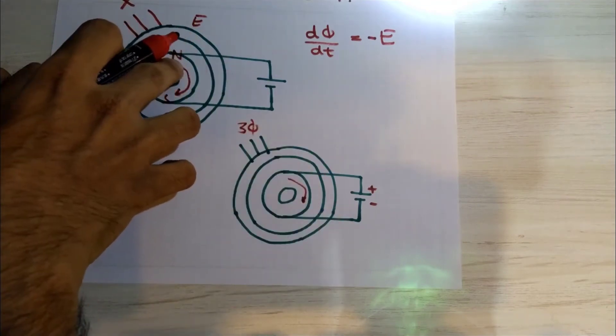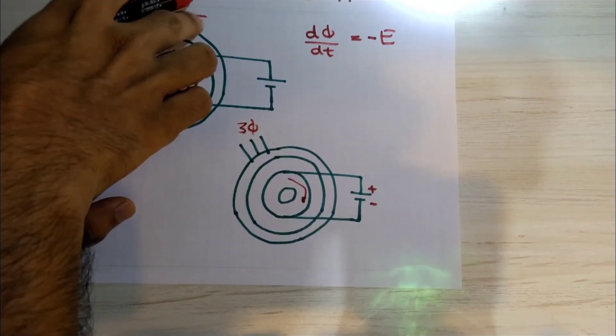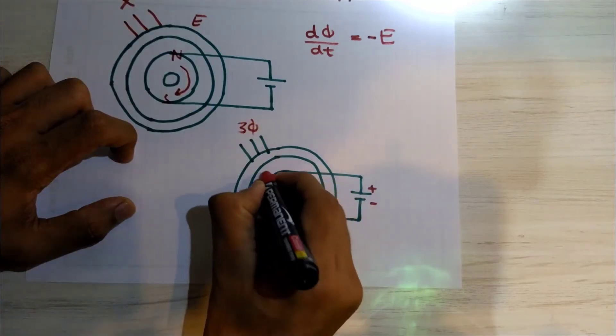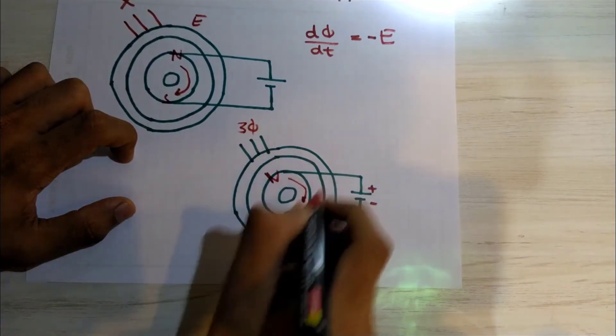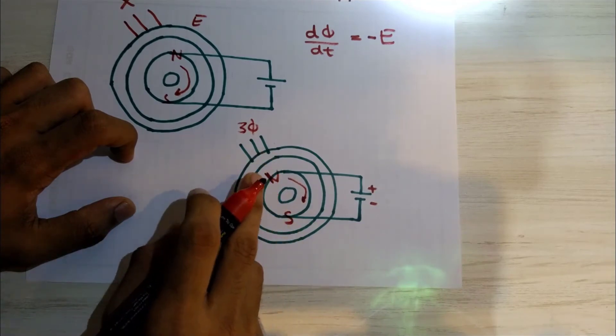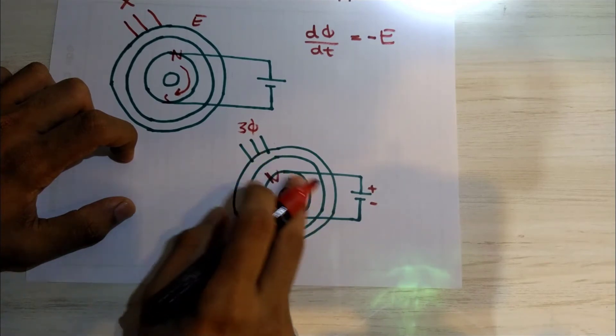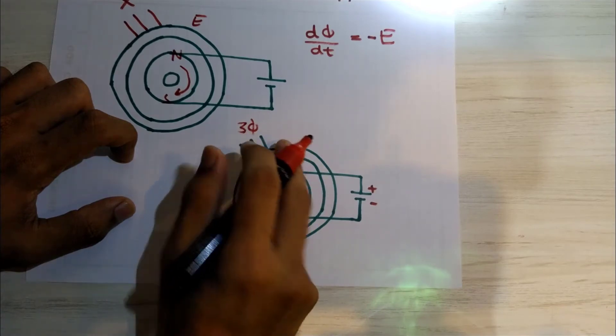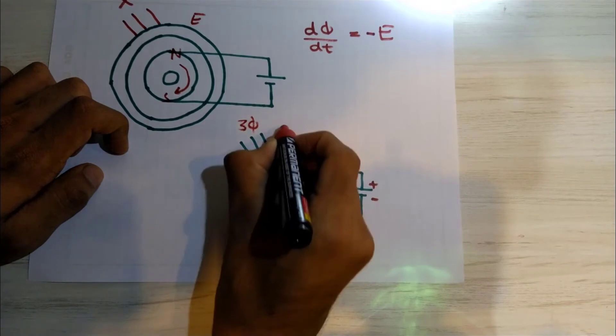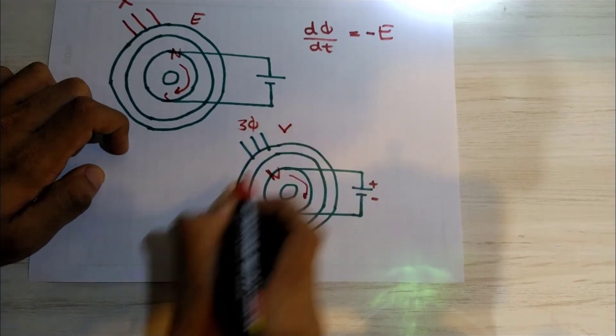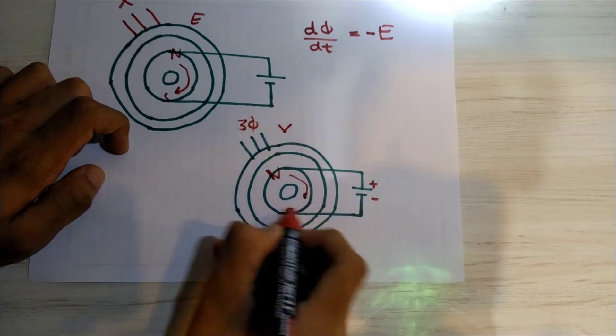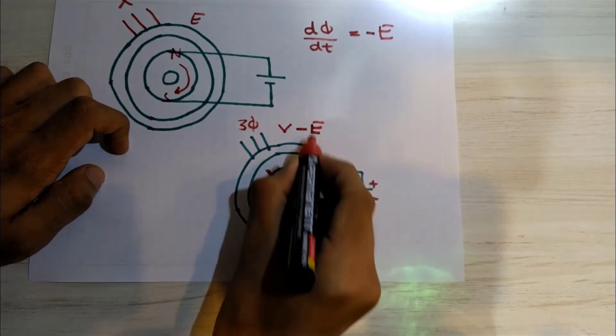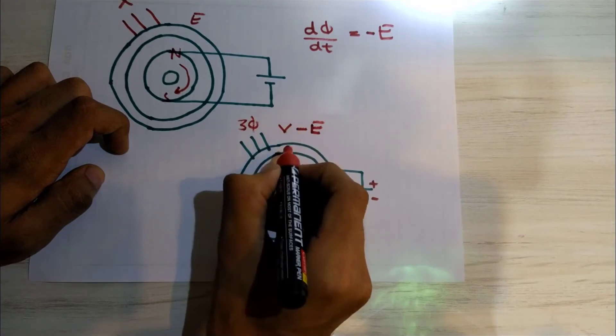What we said here is the rotor flux will produce an EMF in the stator coil because of the flux cutting action. Similarly here, the rotor flux which is rotating because of the rotating magnetic field will produce an EMF in the stator coils. Now the stator coils already have a terminal voltage V, and because of this rotor action will produce another EMF E, which will oppose the cause, therefore negative.